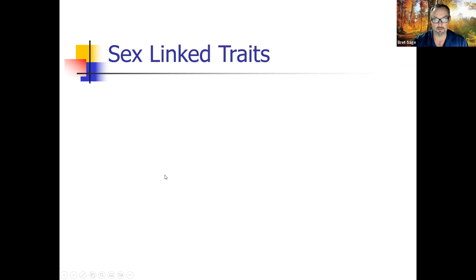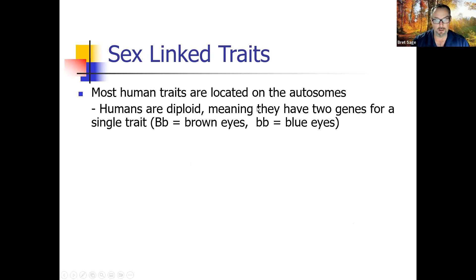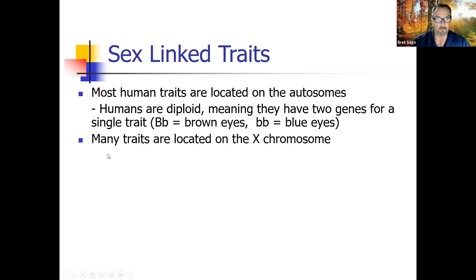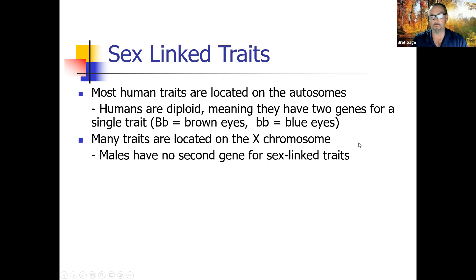Sex-linked traits: most human traits are located on autosomes, having nothing to do with X or Y. Humans are diploid, meaning they have two genes for a single trait — a full set from mom and a full set from dad. For example, you have two genes for eye color: big B, little B gives you brown eyes, and two recessive genes gives you blue eyes. Many traits are located on the X chromosome. Males have no second gene for sex-linked traits — if a male has a recessive on his X, there's no other chromosome to cover it, so it will automatically show.